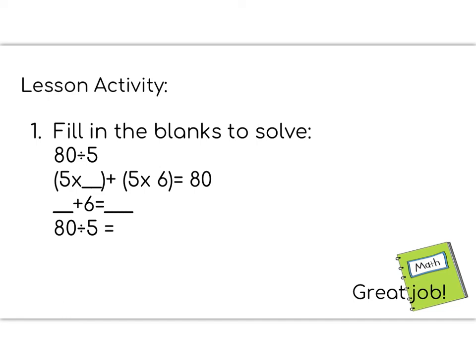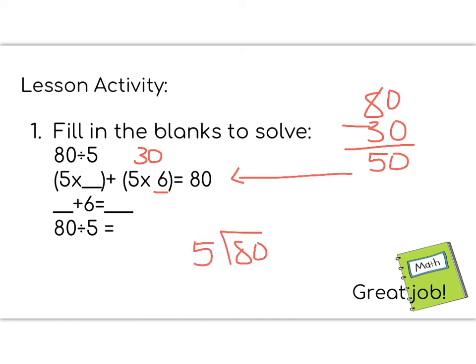All right, fifth graders, it's time for our lesson activity. Today's lesson activity says to fill in the blanks to solve. You're going to divide the number 80 by 5. I'll help you get started. We're going to split 80 into two numbers that can be divided by 5. So if we divide it into 80 and 0, that wouldn't work. So we're going to pull out a 6. 6 times 5 is 30. So if I had 80 and I've pulled out 30, that means that I'm left with 50, which is going to help us fill in that first blank. 5 times what gives us 50. Add those two parts together to solve the problem. You can also do a standard division to check your work. Remember that this work needs to be done in your math notebook and ready to show your teacher.